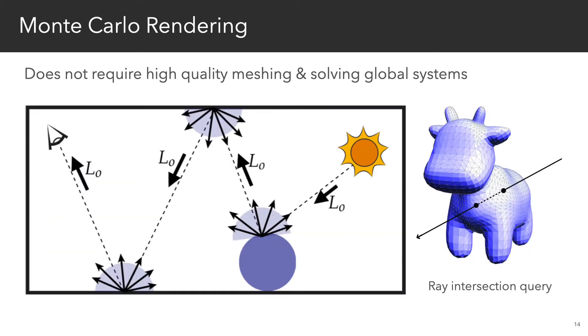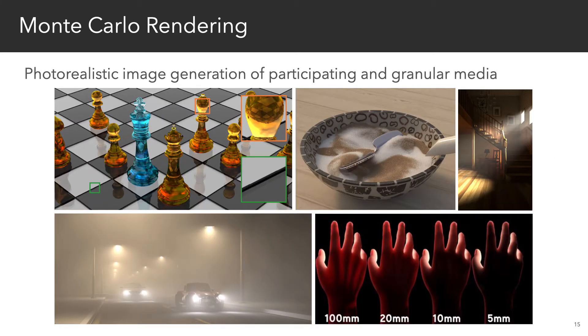To avoid these problems, photorealistic rendering moved away from meshing to Monte Carlo methods, which only need point-wise access to the geometry via ray intersection queries. This enables simulation of intricate light transport phenomena on complex geometric models.